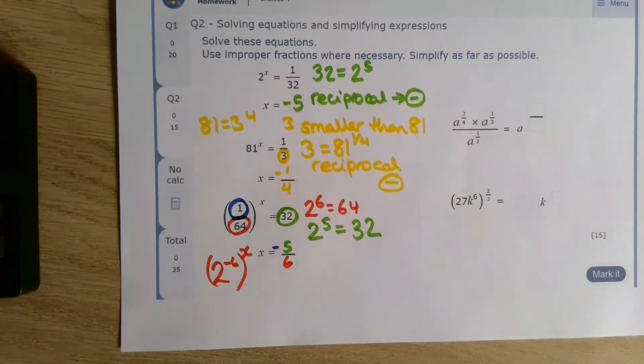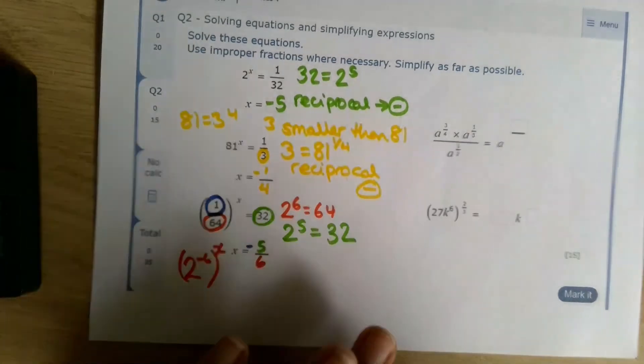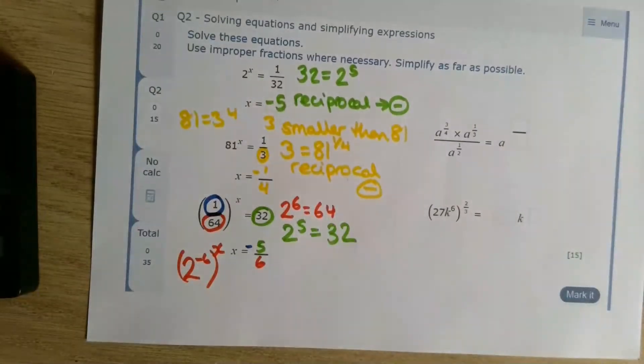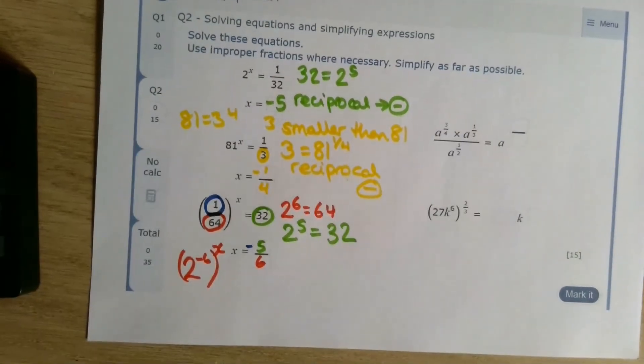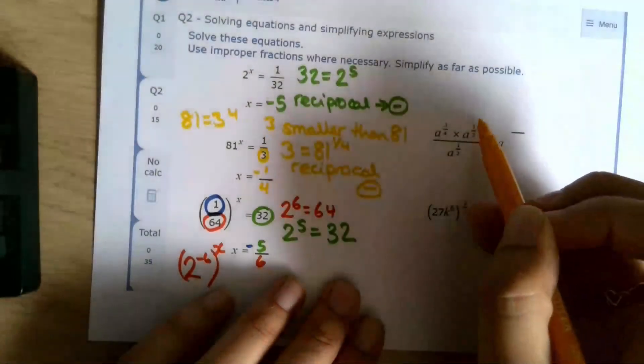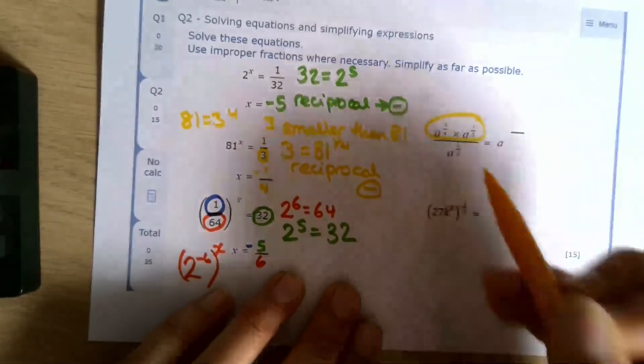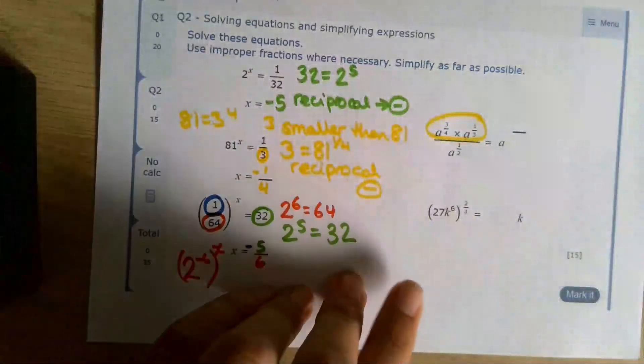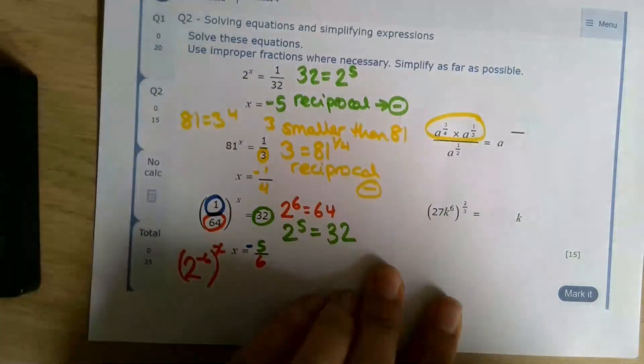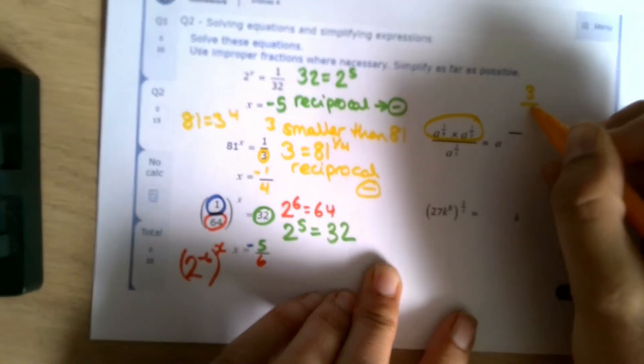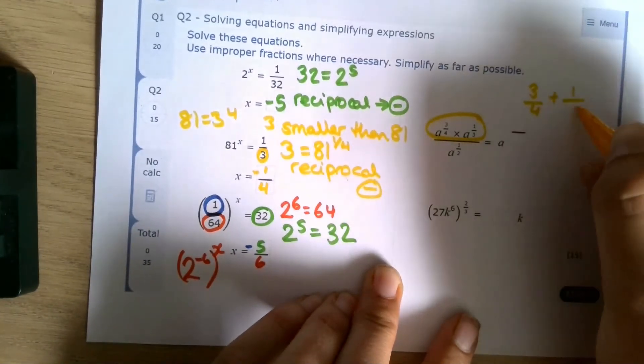I didn't explain that one very well. If you want more explanation, please do email me. Next one, this one is more a simplifying, so that's not too bad. This is just using our knowledge of powers. So let's concentrate on the numerator of this fraction first. What do we do when we multiply powers? We add them. So we're going to do 3 quarters add 1 third.